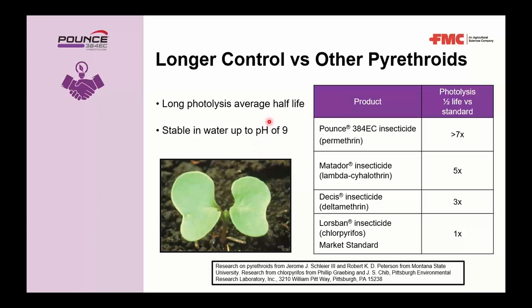Pounce's permethrin has a longer photolysis or light stability than competing products. Research conducted at the University of Manitoba and the Pittsburgh Environmental Research Lab showed Pounce had higher light stability than Matador, Decis, and Lorsban. Lorsban is the standard; Decis is 3x, Matador 5x, but Pounce is 7x longer light stability than the Lorsban check. With greater light stability, the product remains available longer for insects coming in contact with treated surfaces. It is also stable in water up to a pH of nine.